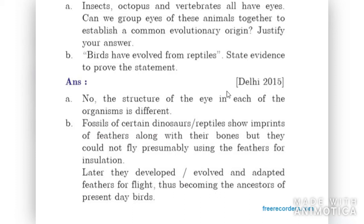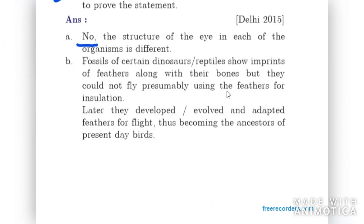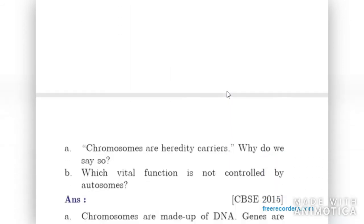Insects, octopuses, and vertebrates all have eyes. Can we group their eyes to establish a common evolutionary origin? The answer is no, because the structure of the eye in each organism is different. Therefore, these are analogous organs and we cannot say there is any common evolutionary origin. Part B — birds evolved from reptiles — has been covered in earlier questions.